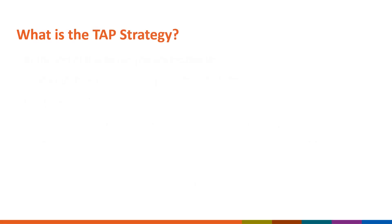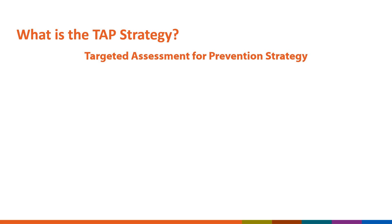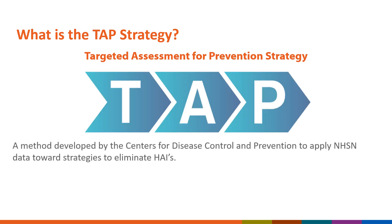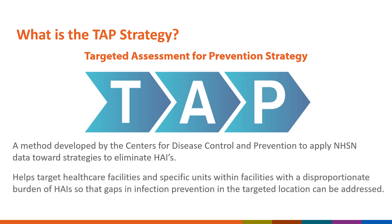What is the TAP Strategy? The Targeted Assessment for Prevention Strategy, or TAP, is a method developed by the Centers for Disease Control and Prevention to apply NHSN data towards strategies to eliminate HAIs. The TAP Strategy can help target healthcare facilities and specific units within facilities with a disproportionate burden of HAIs, so that gaps in infection prevention in the targeted location can be addressed.